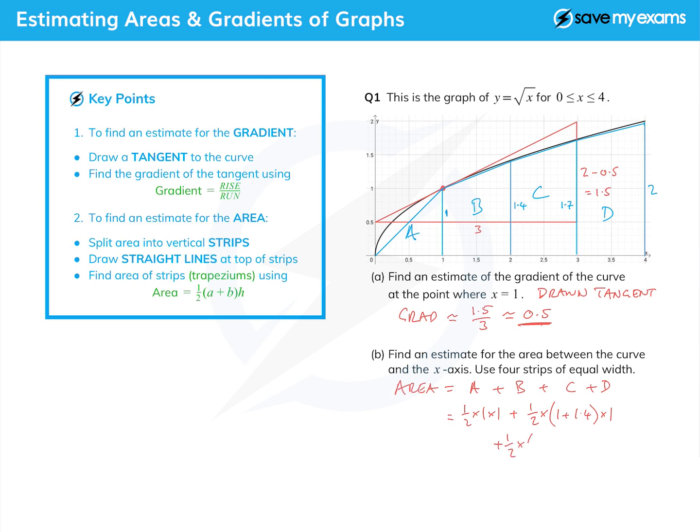C is a half of the parallel sides of 1.4 and 1.7 times the width between them which is one. And the last one D is 1.7 and 2 times 1 again.